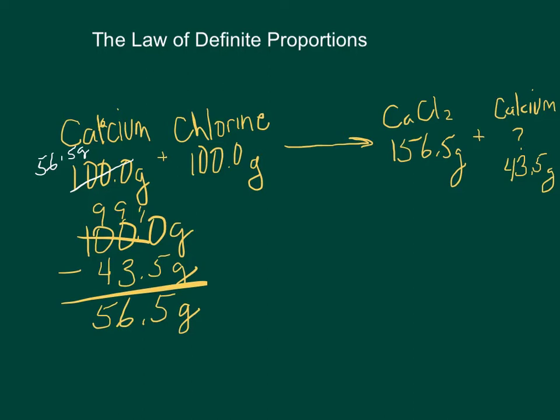Now, notice that this doesn't change any of the grams of the chlorine we have. We need that much chlorine to react with that much calcium. And then, together, they are going to add, and we can check and make sure that's right, 100 plus 56.5 is 156.5 with no leftovers.